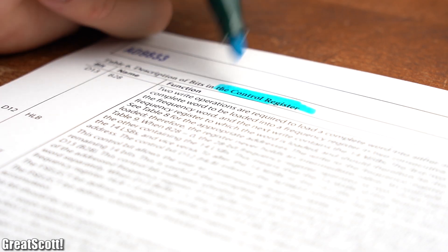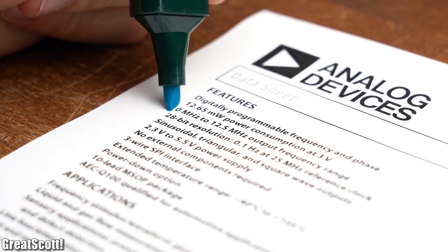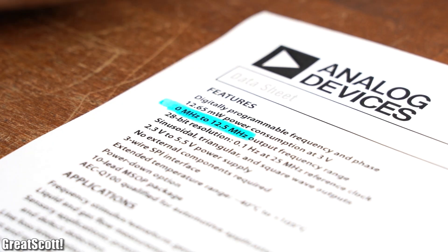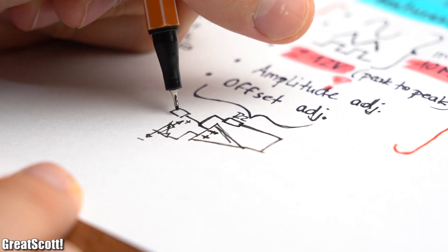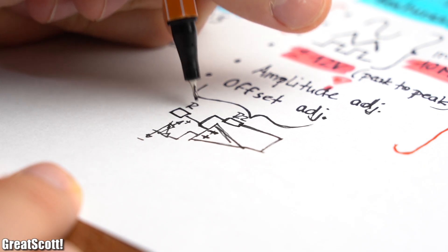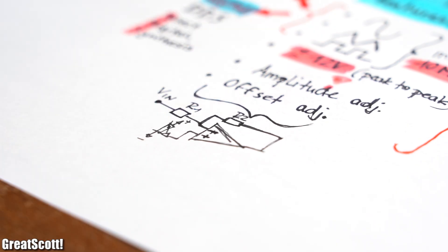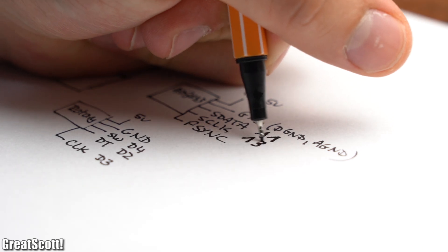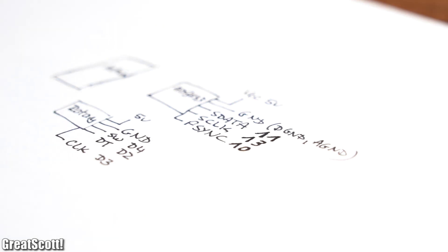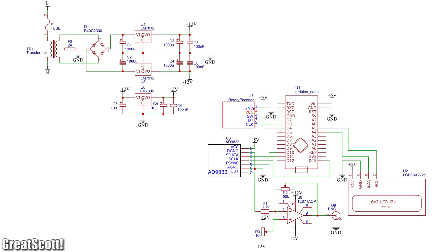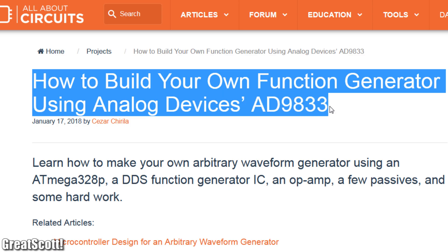And speaking of waveforms, by writing to the control, frequency and phase registers, we can not only achieve a frequency of up to 12.5 megahertz, but also a triangle and square wave. And since adjusting the output voltage between plus minus 12 volts and adding an offset should be easy to do with an op-amp circuit, I started designing my DIY function generator around this AD9833 IC. But while I was getting close to finishing my circuit schematic, I noticed that someone else already created a very similar project.